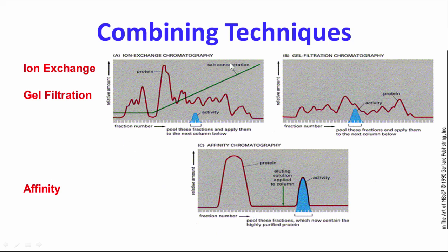You can combine these techniques in multiple ways. For example, you might run an ion exchange step with a salt concentration gradient, collect the fractions containing your enzyme's activity, then run gel filtration to focus on your peak, and finally do affinity chromatography where non-binding proteins wash through and you change conditions to elute yours. Hopefully at this point it is pure.